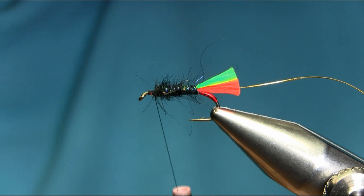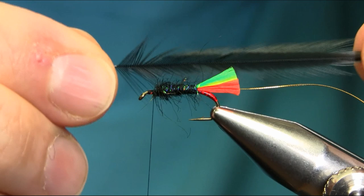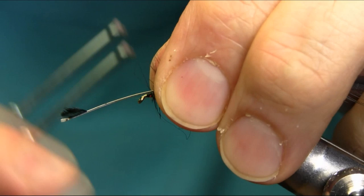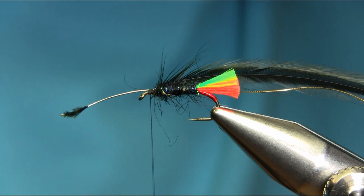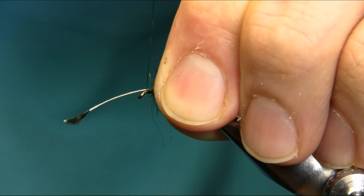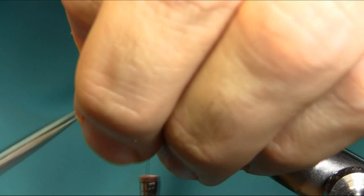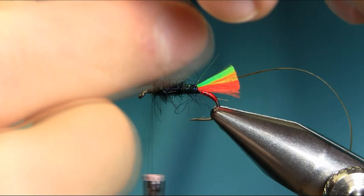Take your time. Okay, so that's your dubbing. This is hen hackle dyed black. Catch this one, make sure you secure this properly. Just take off the stem.